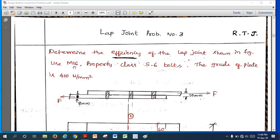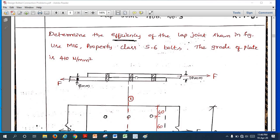The bolts of diameter M16, M16 property class 5.6 bolts. The grade of a plate given is 410 N/mm². This is the figure they are given.